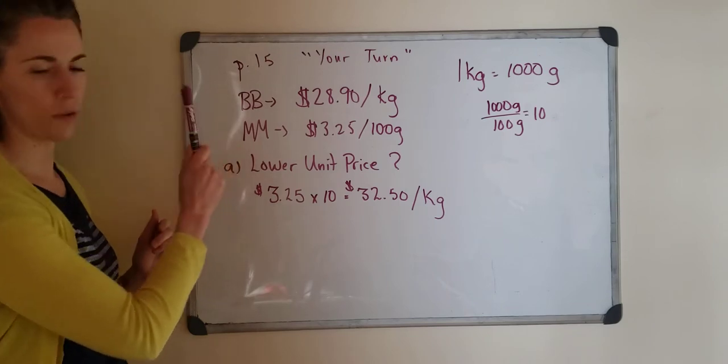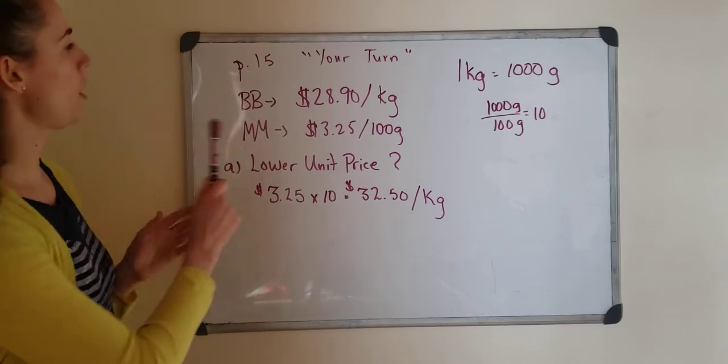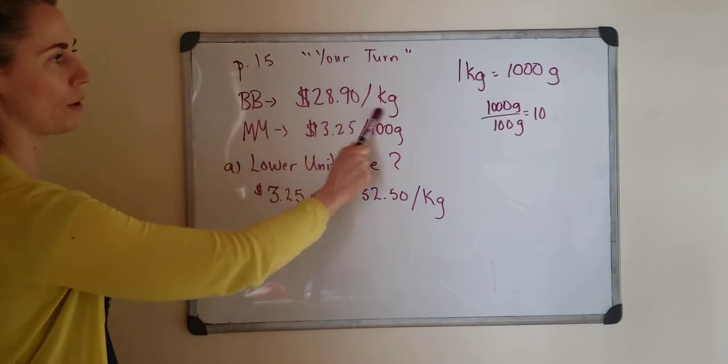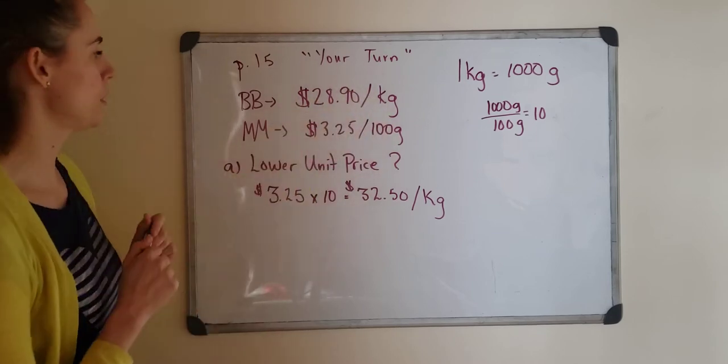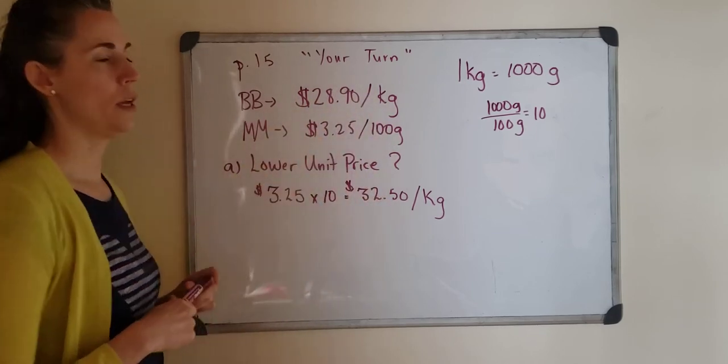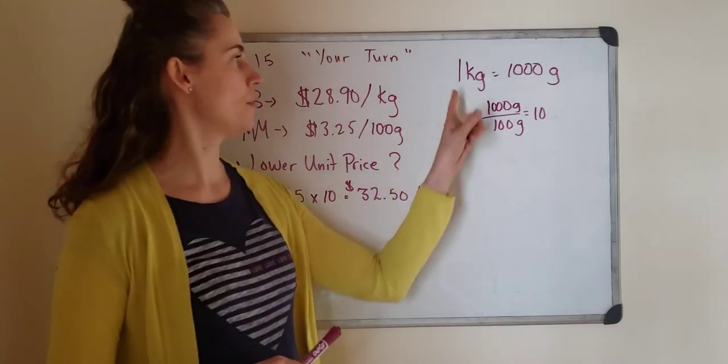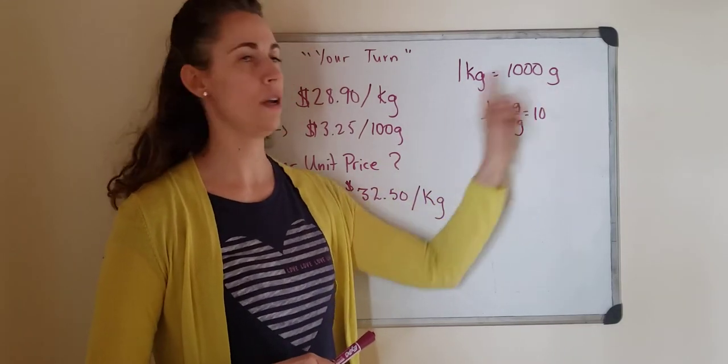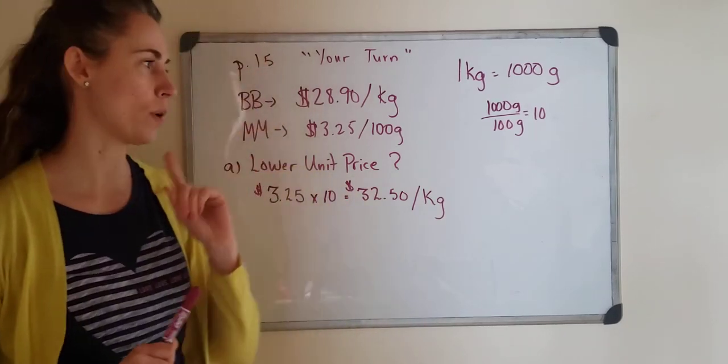So I wrote down our basic information. At the Butcher Block $28.90 per kilogram, and at the Meat Mart $3.25 for 100 grams. Now I'm sure you remember this but if not, we know that one kilogram has 1000 grams in it. That's important.